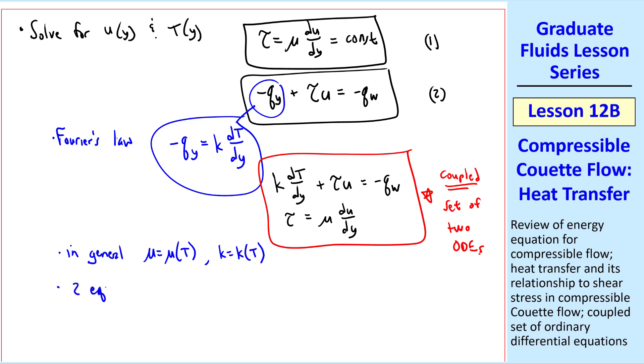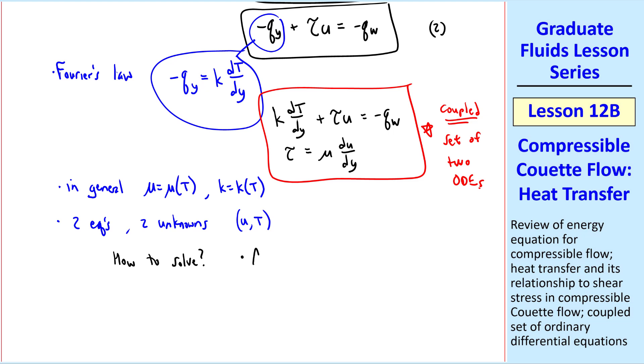So stepping back, we see that we have two equations. We also have two unknowns, u and t. And everything else is a function of temperature, with tau being a constant and qw being another constant. So theoretically, we should be able to solve this. How do we solve? Well, we can try it analytically, which I'll do in a moment. Or we can use numerical technique, such as Runge-Kutta, where we can march from the lower wall to the upper wall, for example, solving these two equations simultaneously.